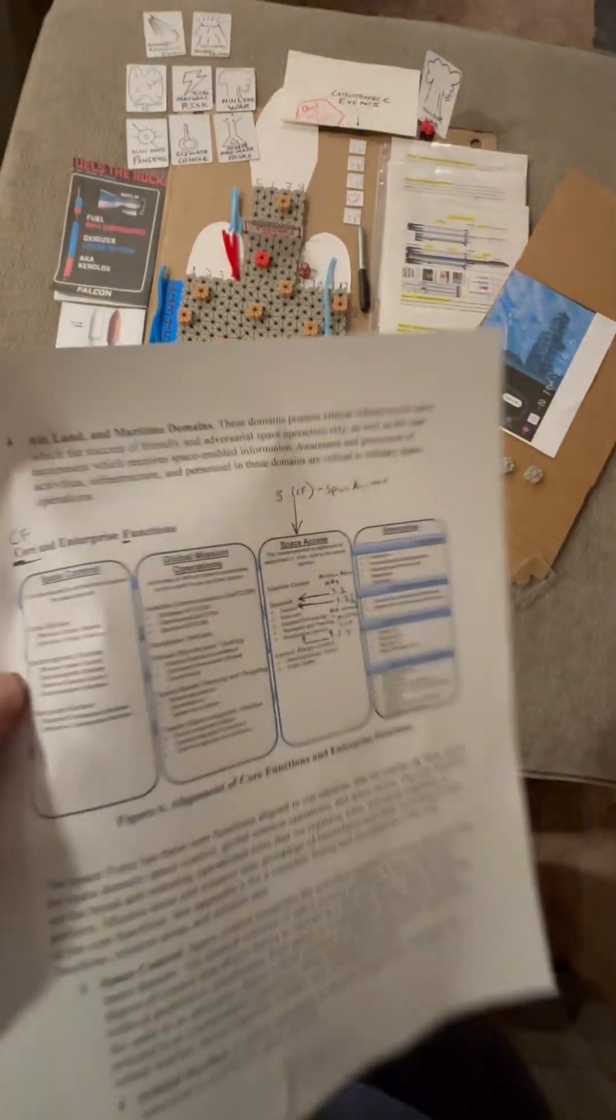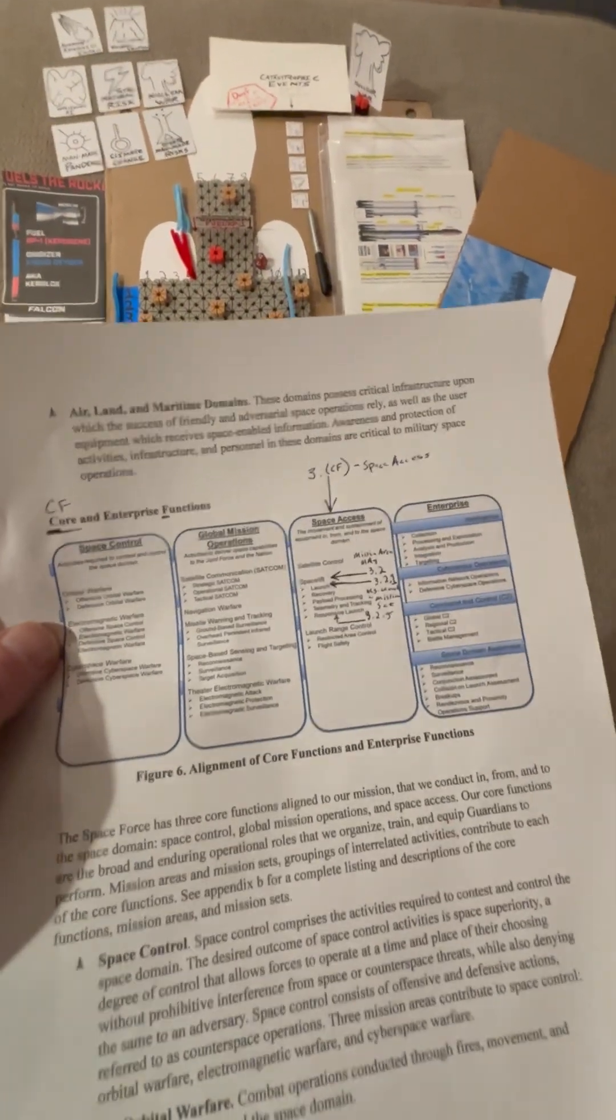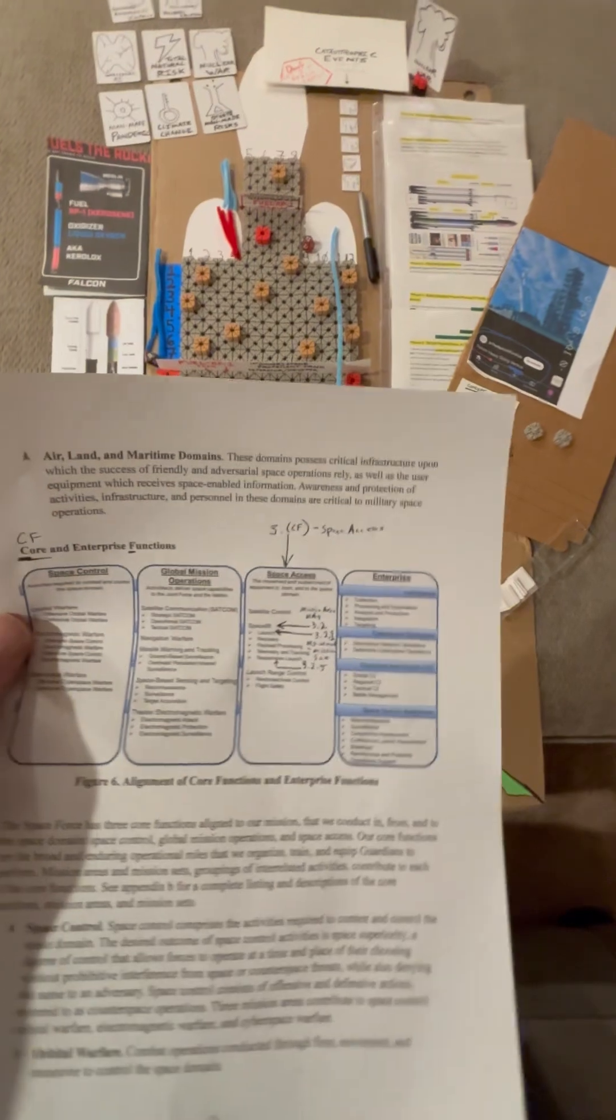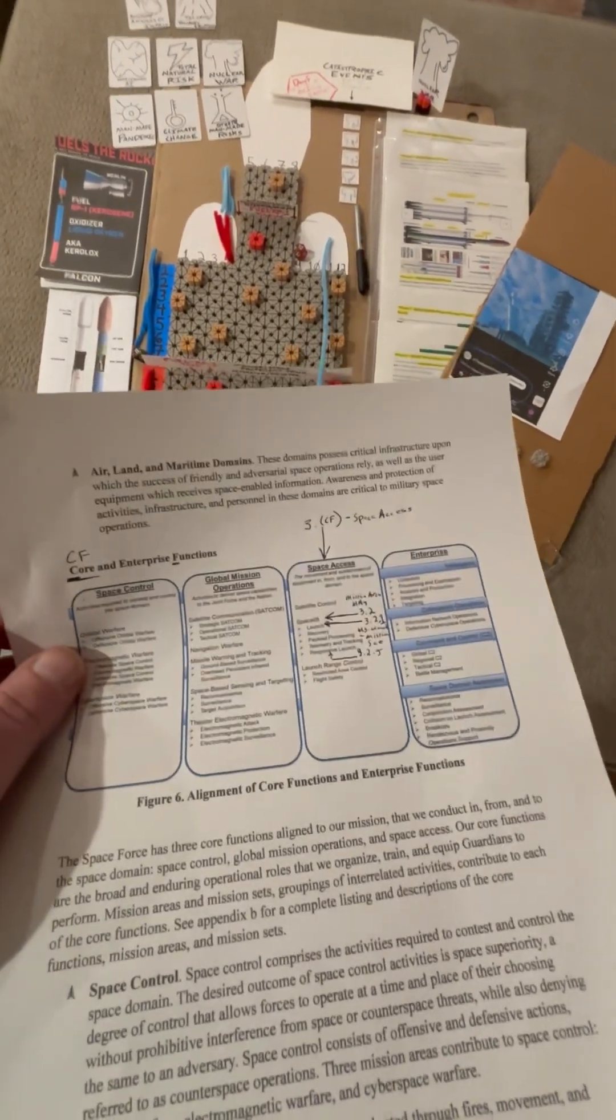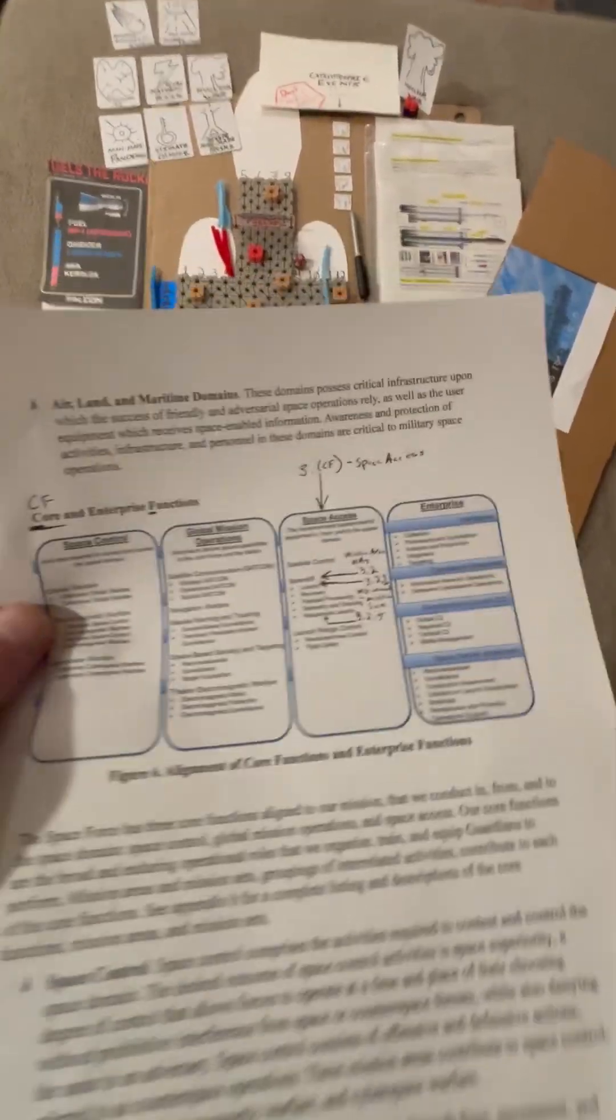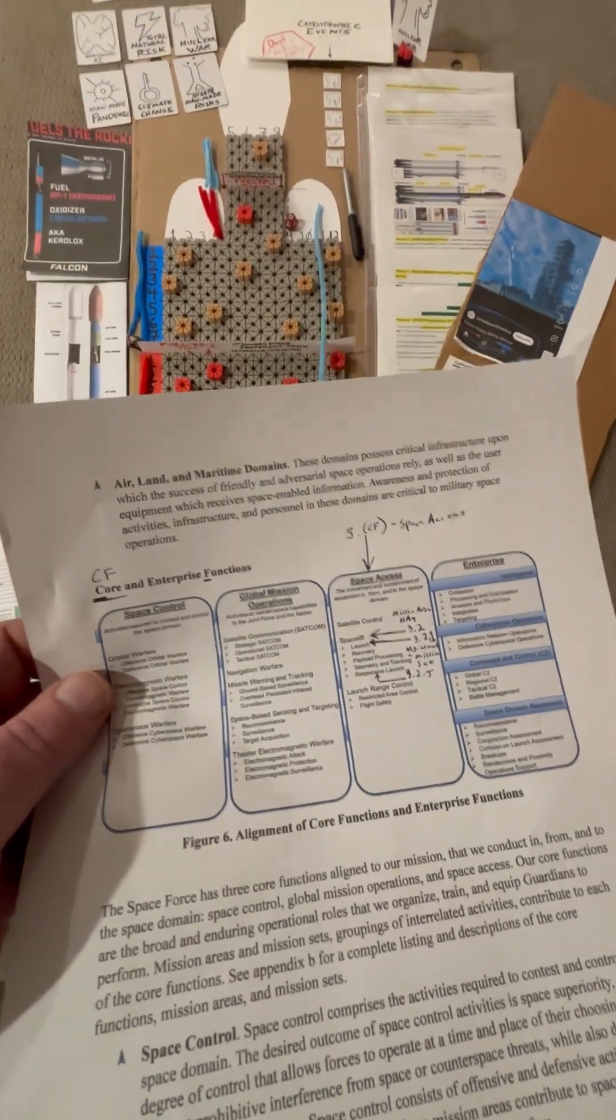In the meantime, while I'm working on it, I thought we would dive a little deeper into SFDD-1. SFDD-1 is the Space Force Doctrine Document 1, and it is the Space Force's Capstone Doctrine publication. It was released earlier this month, Friday, the 4th of April.